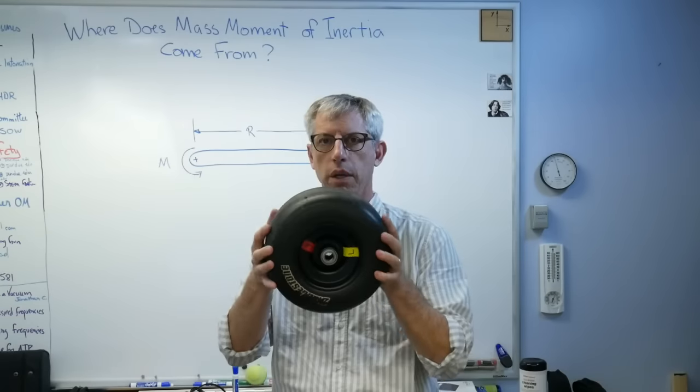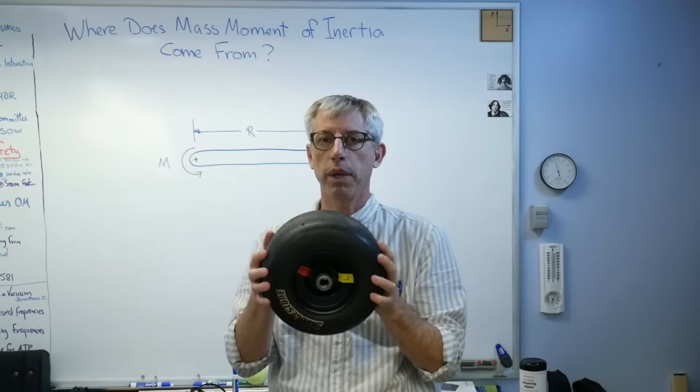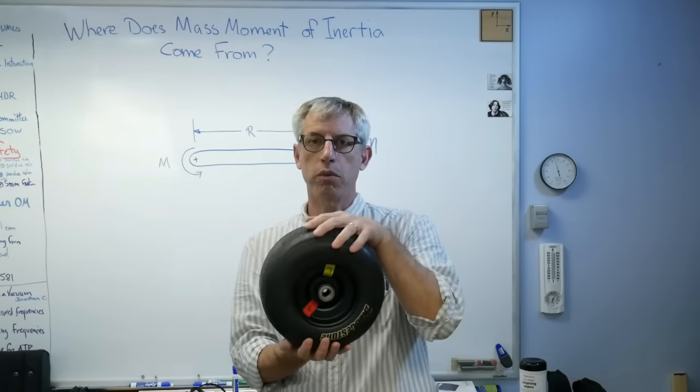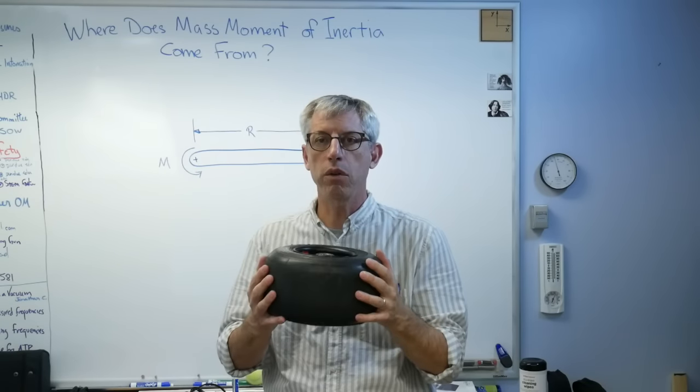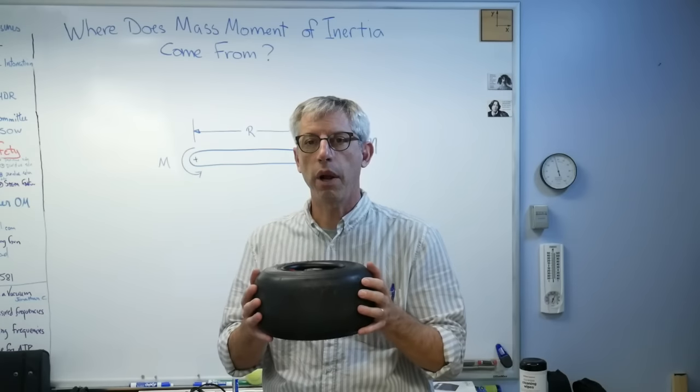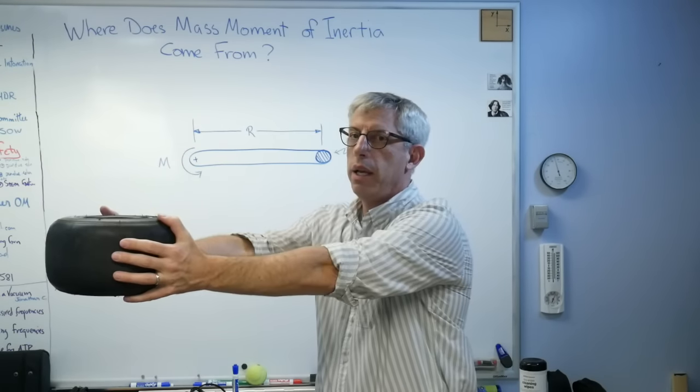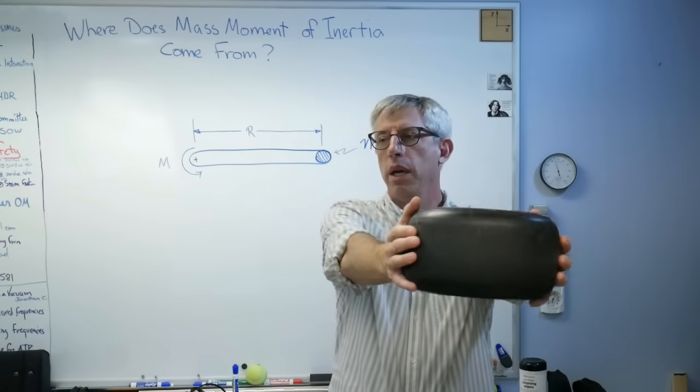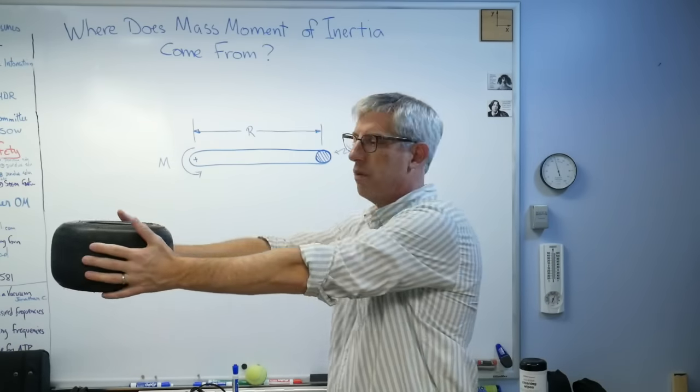Now if I want to spin this tire about its own axis like this, the moment required is very low because there's not much resistance to rotational acceleration. All I have to do to make it harder to spin is rather than spinning about its own axis, hold it out like that and now spin it.